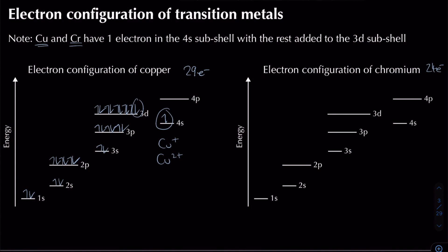For chromium: with 24 electrons, filling through 1s, 2s, 2p, 3s, 3p gives 18 electrons, then one electron goes into 4s (electron 19), and electrons 20–24 half-fill the 3d subshell. Chromium's d subshell is half-filled (3d5), compared to copper's completely filled 3d10. Chromium can form transition metal ions — for example Cr3+, where you remove the 4s electron and two 3d electrons, leaving a partially filled d subshell.